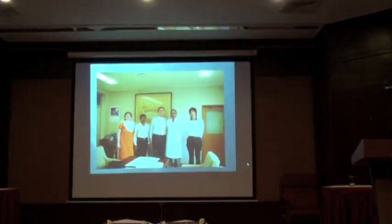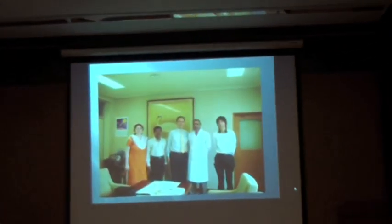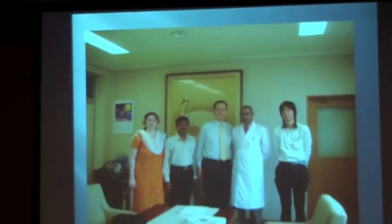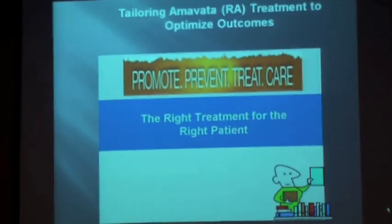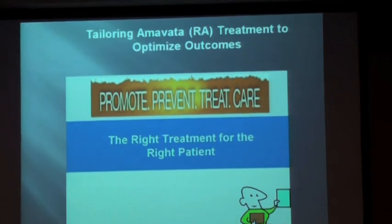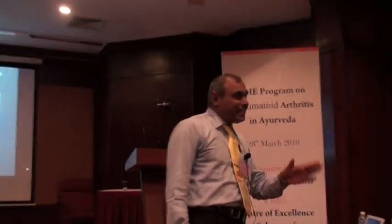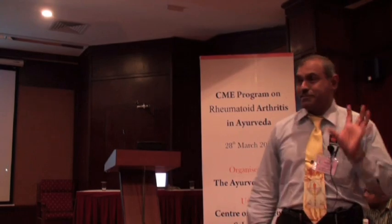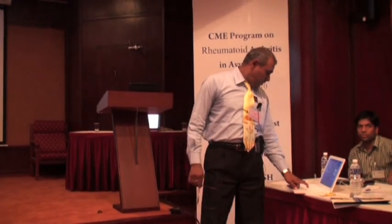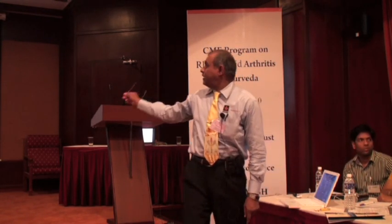The team consists of the Japanese doctors, myself, a PhD student working on this, and two therapists I brought there. Our thumb rule is: the right treatment for the right patient. We also added that the treatment should answer all elements — it should promote, prevent, treat, and care — covering all elements of clinical practice. This is the flow chart developed for approach in these patients.